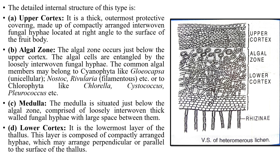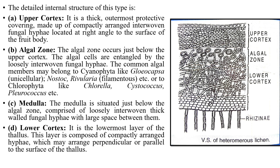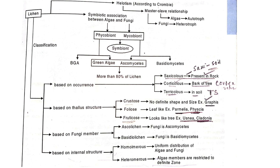The detailed structure of a heteromerous lichen: the upper cortex is a thick outermost protective covering compactly made up of interwoven fungal hyphae. Below that is the algal zone, where algae are restricted. The medulla is situated below the algal zone and is comprised of loosely interwoven thick fungal hyphae with large spaces between them. The lower cortex is composed of compactly arranged hyphae, which may be arranged perpendicularly or parallel to the surface of the thallus.